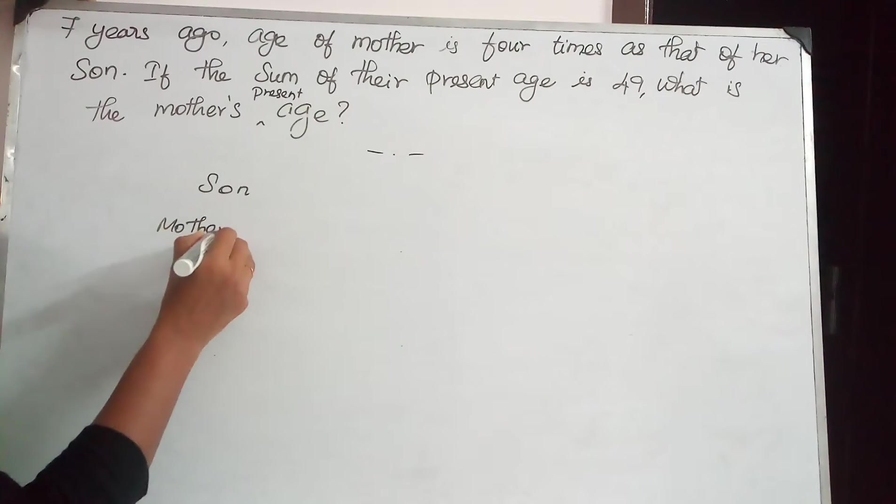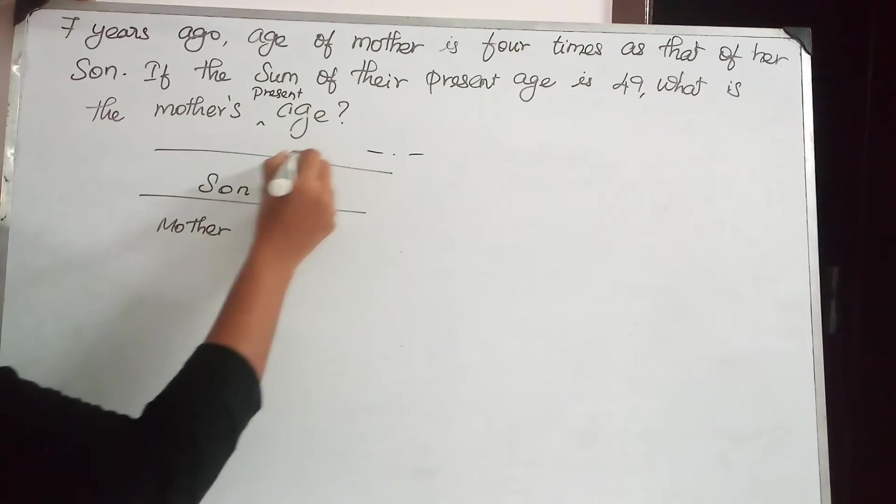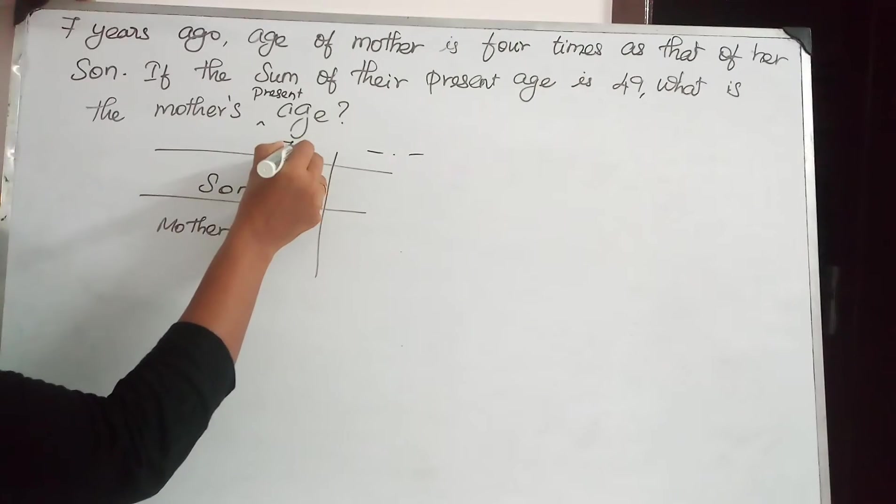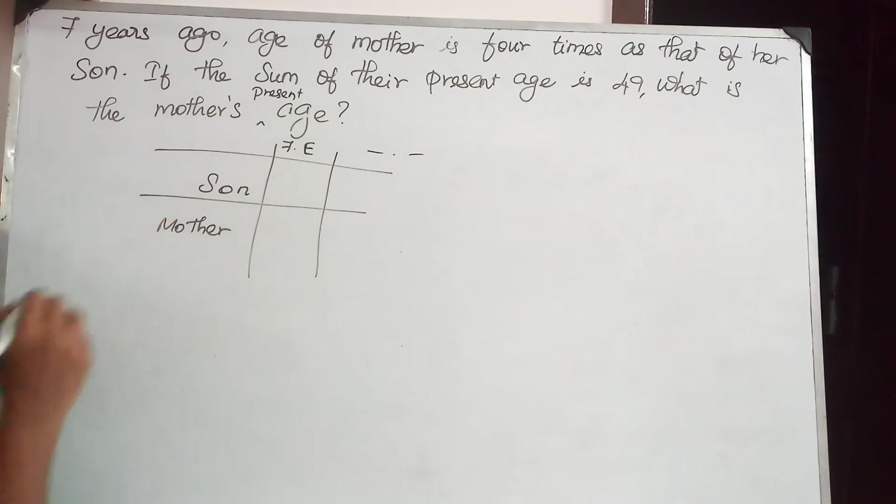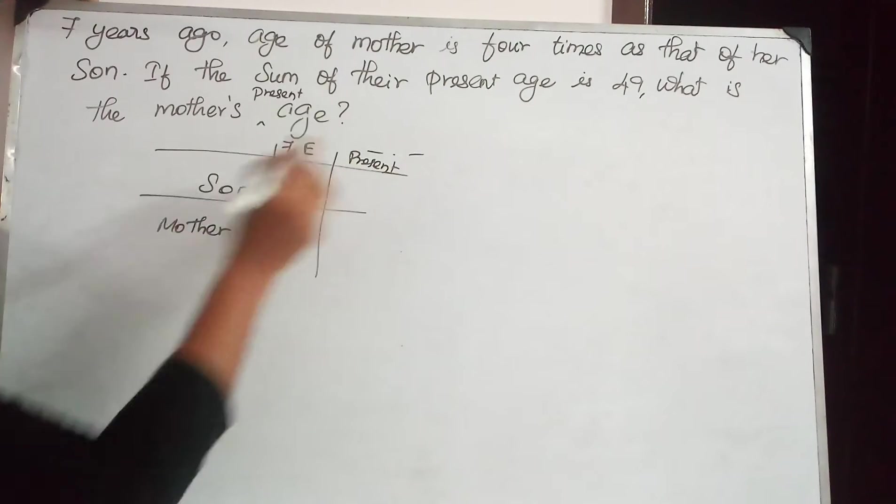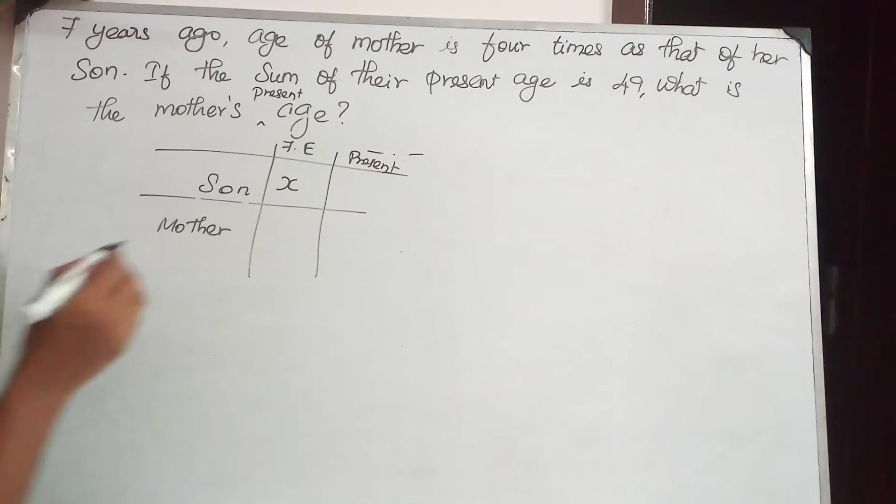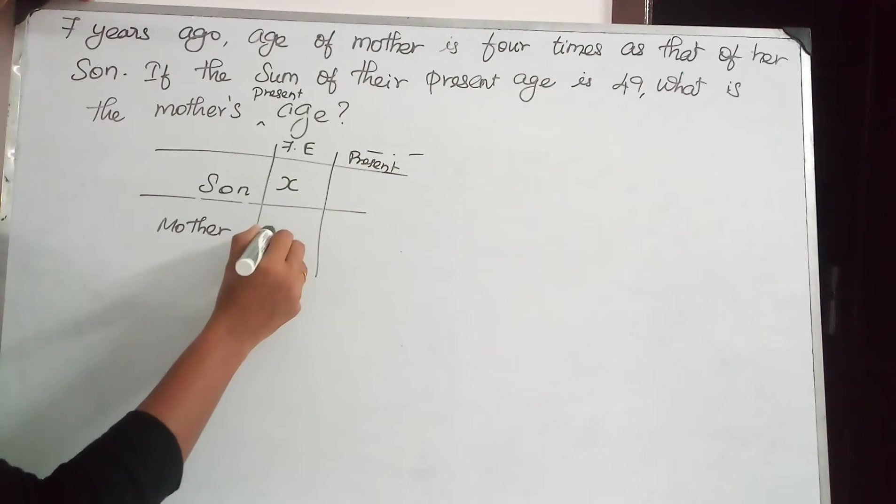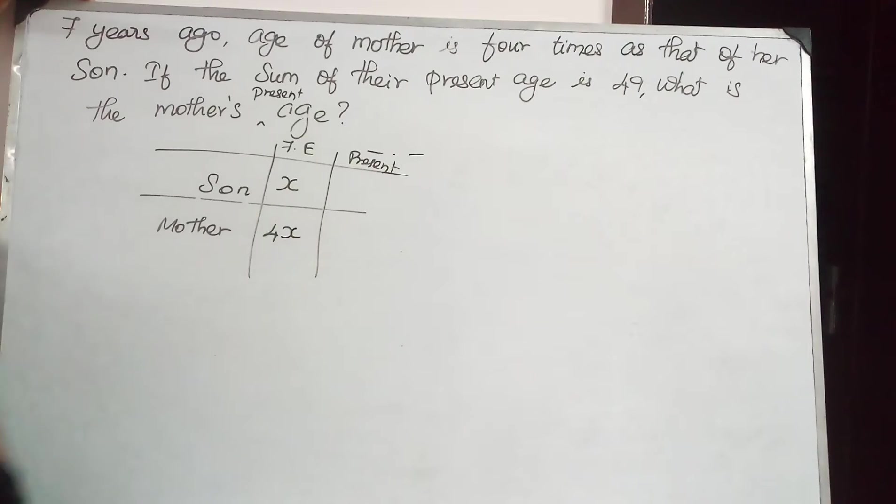In this case, they have given 7 years, 7 years earlier and present age. So let us assume the age of son as X. The mother's age will be 4 times, so it is 4X.